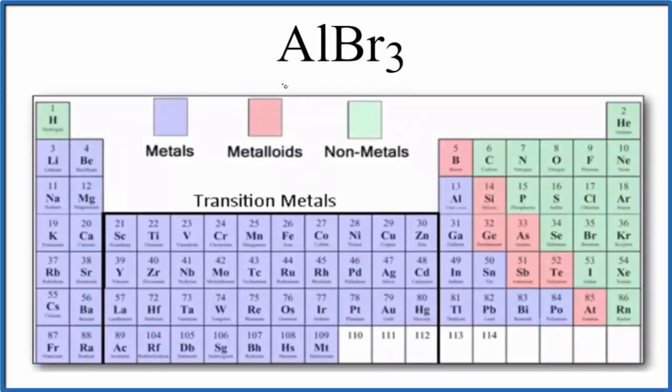In this video, we'll look at whether AlBr3, that's aluminum bromide, is ionic or covalent. So there's a few ways we can do this. First, we can look at aluminum and the bromine and see if they're metals or nonmetals. Aluminum right here, that's a metal, and bromine, that's a nonmetal.